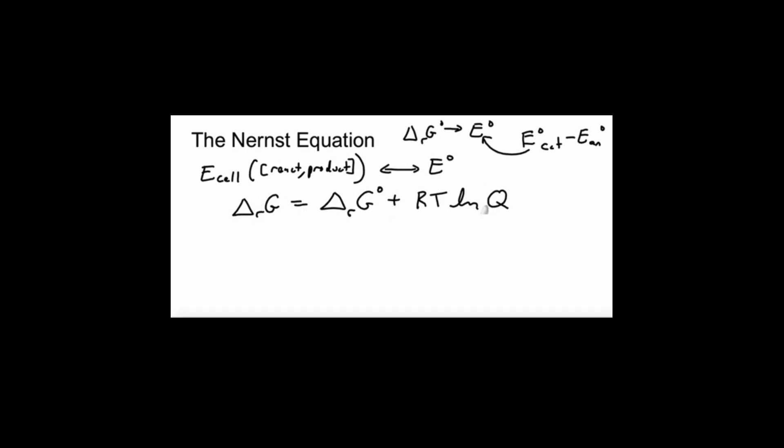Well, we can turn this equation into an electrochemical format by remembering that delta G standard is equal to negative NF times E standard. And just as we can do this for standard cell potentials, we can do this for non-standard cell potentials. We can go back and forth between the energy world and the voltage world just by using Faraday's constant and the number of electrons, moles of electrons, transferred.